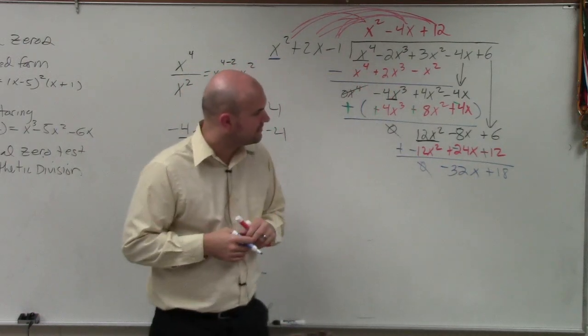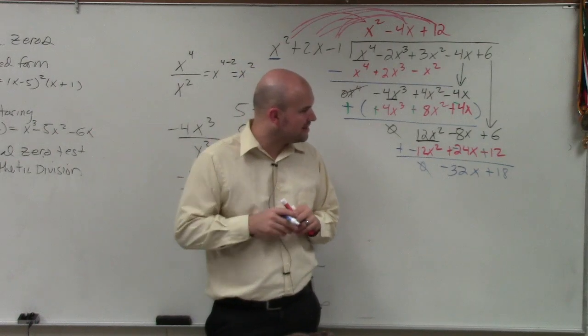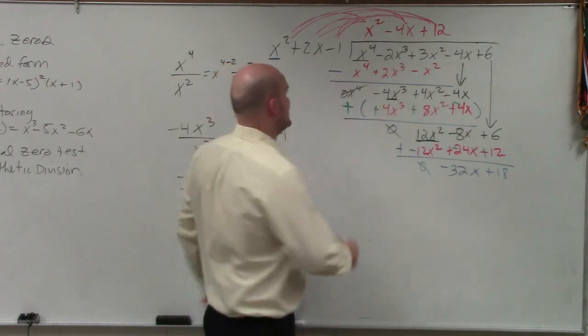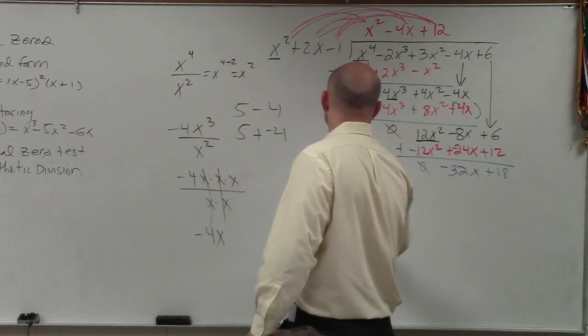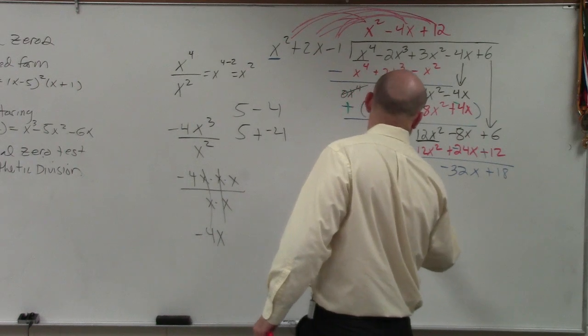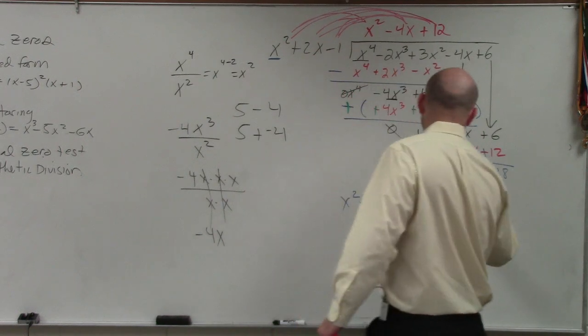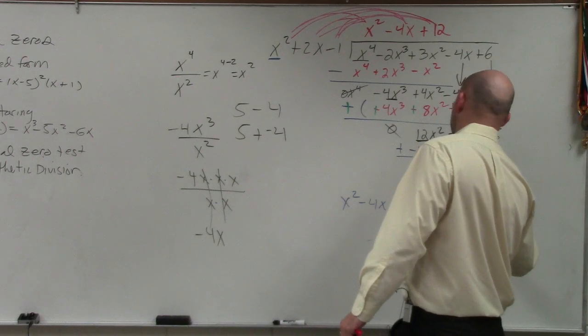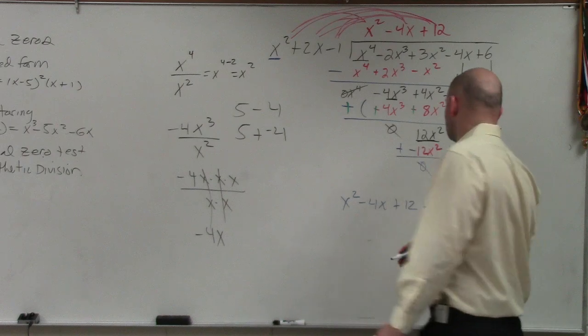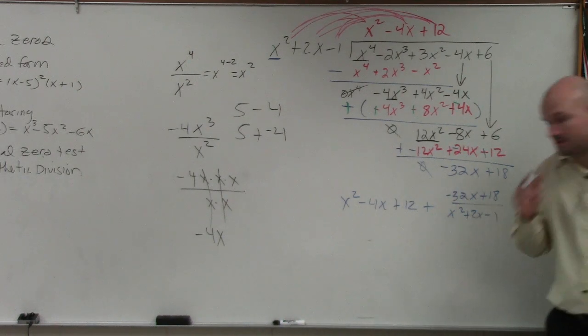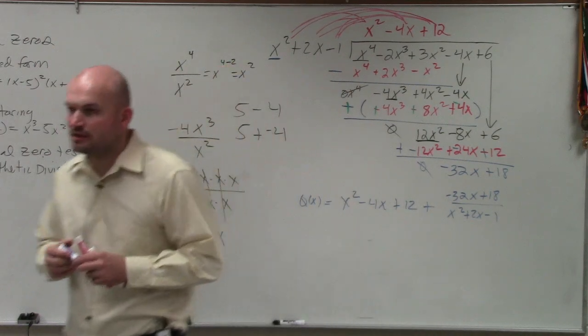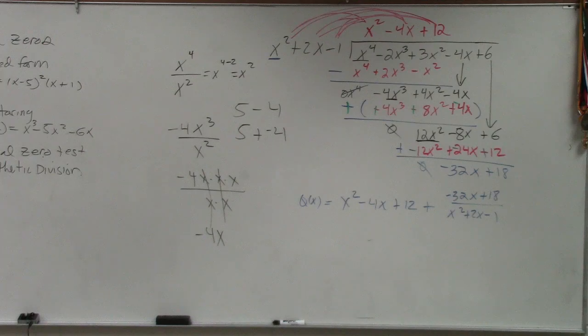No, it's a negative. Yep. Man, that's three mistakes for this problem. Minor ones. So you guys can see that my quotient, if I was going to write out my quotient, is x squared minus 4x plus 12 plus my remainder over my divisor. So that would be technically what your quotient is. Q of x, sometimes we call it. Anybody have any questions on that?